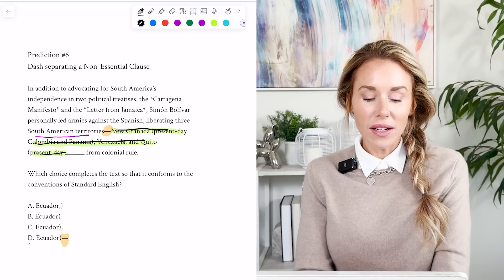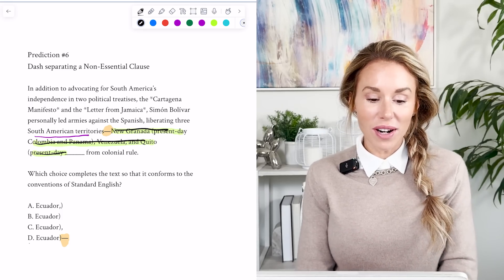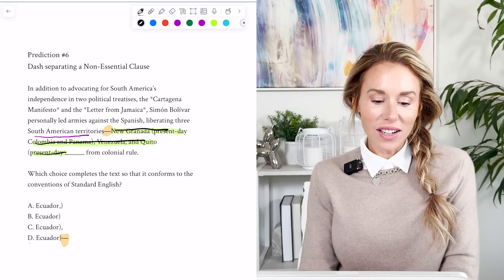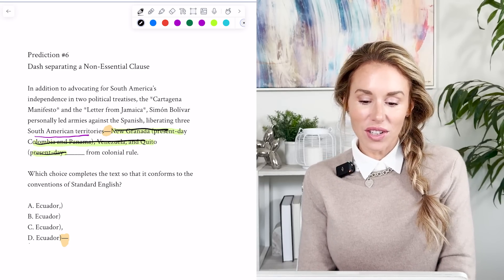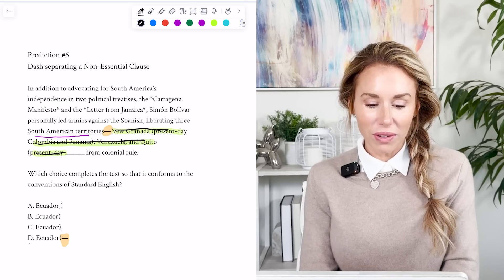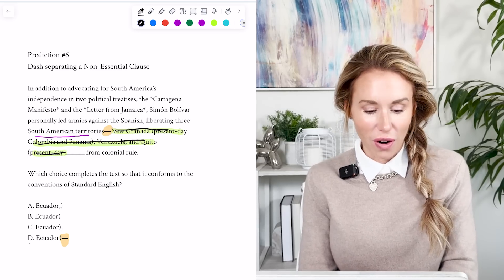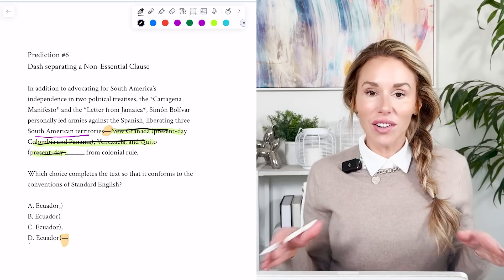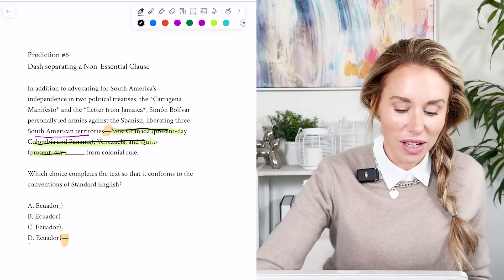I could take that whole thing out and read it and the sentence still makes sense. I could say, in addition to advocating for South America's independence and two political treatises, the Cartagena Manifesto and the Letter from Jamaica, Simone Boulevard personally led armies against the Spanish, liberating three South American territories from colonial rule. See how I don't need that in there? It literally makes sense without it. So I'm going to go with D.